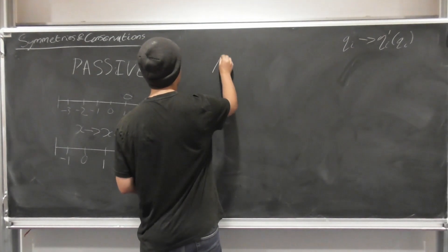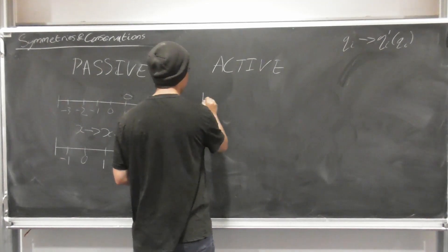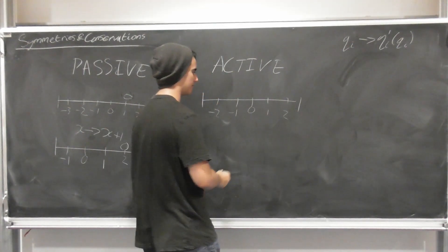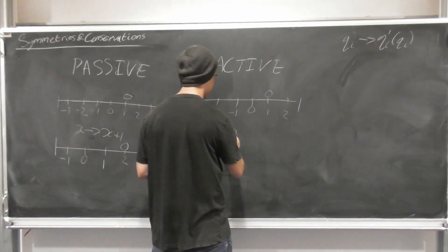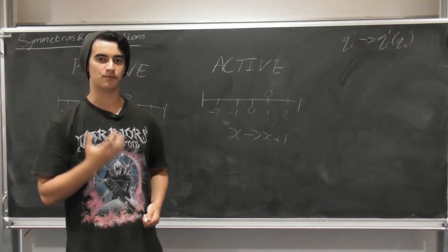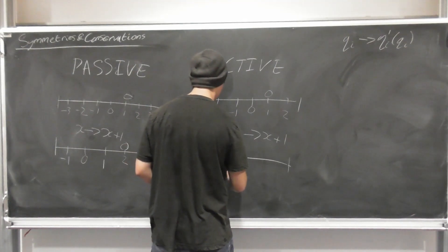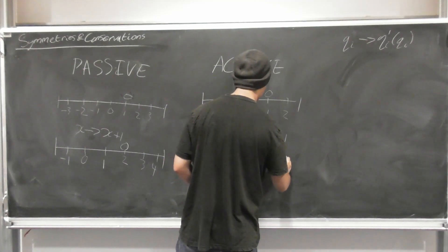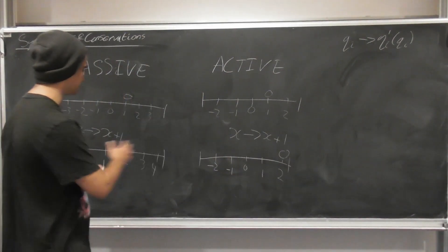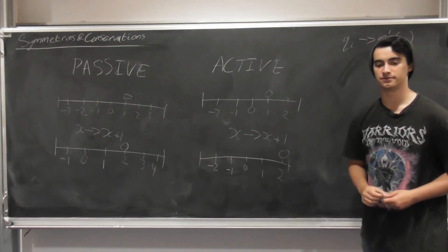The other approach is the active transformation. With the same number line and particle at 1, under x → x+1, we keep the coordinate system fixed and move the particle itself. The particle moves to position 2. Both approaches achieve the same result but with different ways of thinking about it. We'll use the active sense going forward.